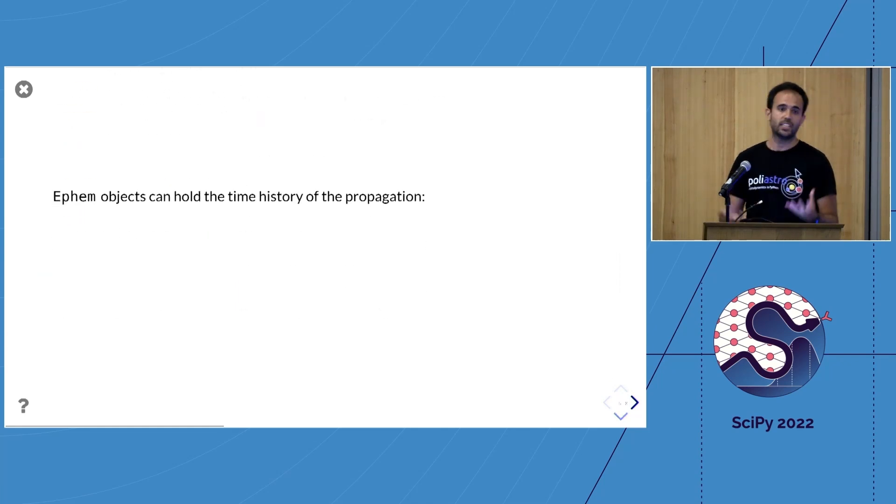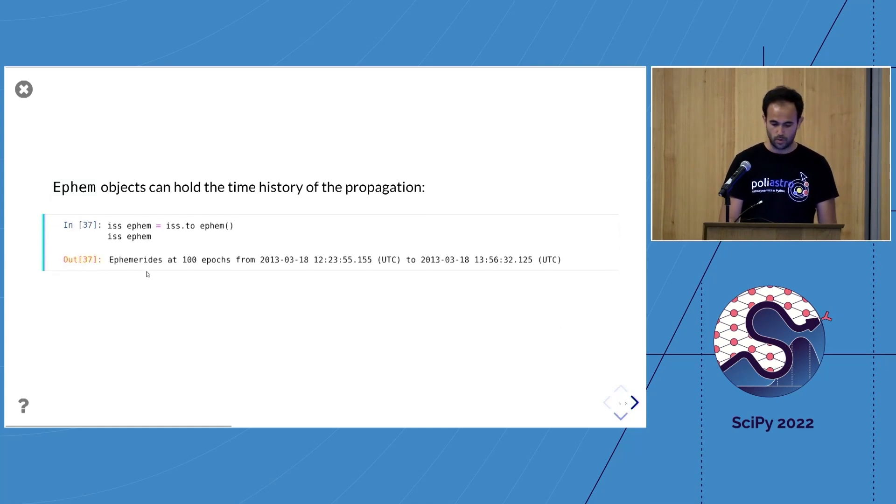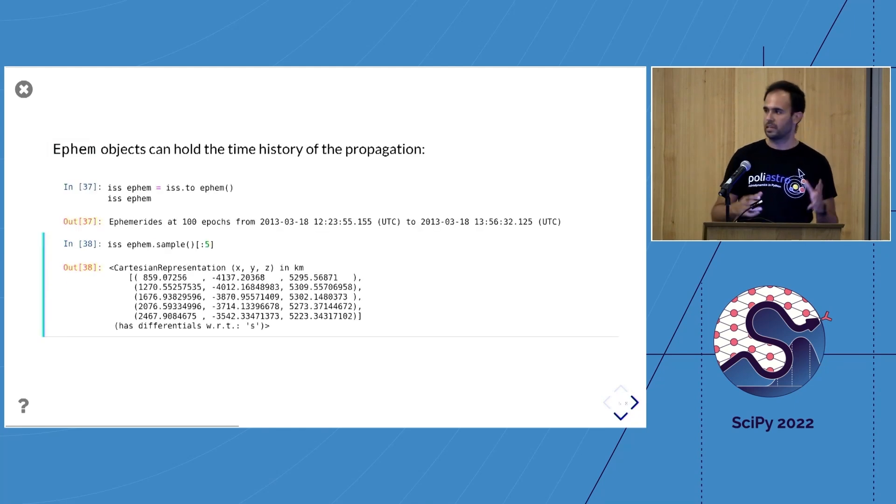This gives you the final orbit, but if you want all the intermediate positions—all the time history—you can do that through what we call the ephemerities objects. If you call the sample_ephem method with default parameters, this returns ephemerides with a hundred intermediate times. Then you can sample it, and this gives you the position and velocity as an AstroPy Cartesian representation object that you can further manipulate.